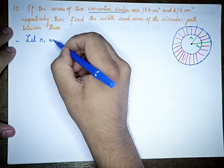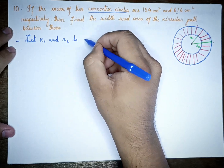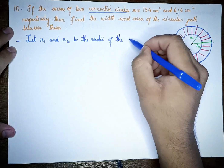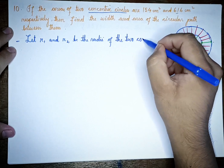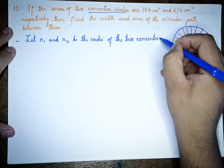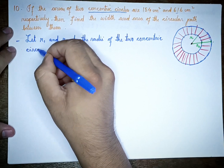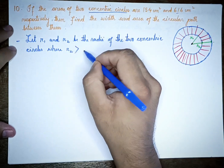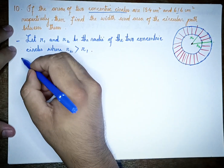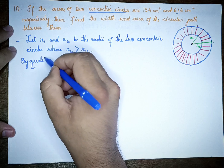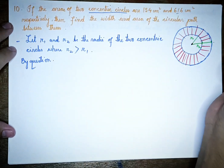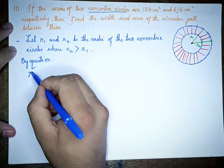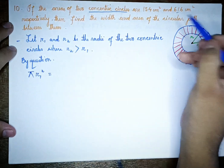Let r1 and r2 be the radii of the two concentric circles, where r2 is greater than r1. The area of the smaller circle: π r1² = 154.